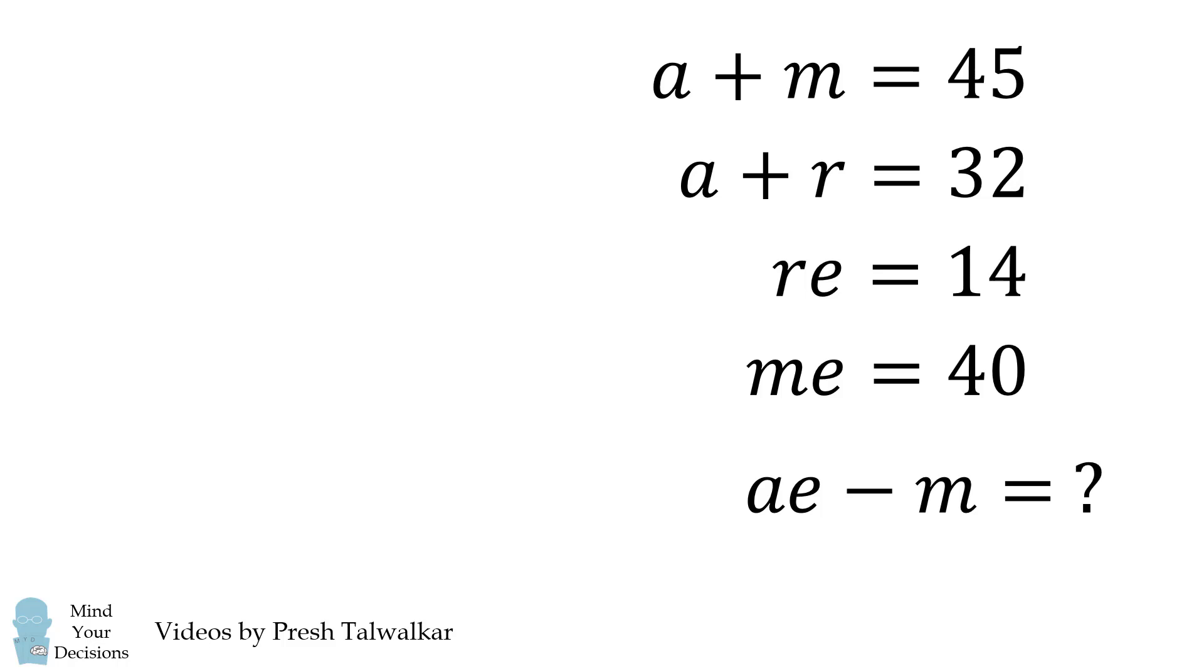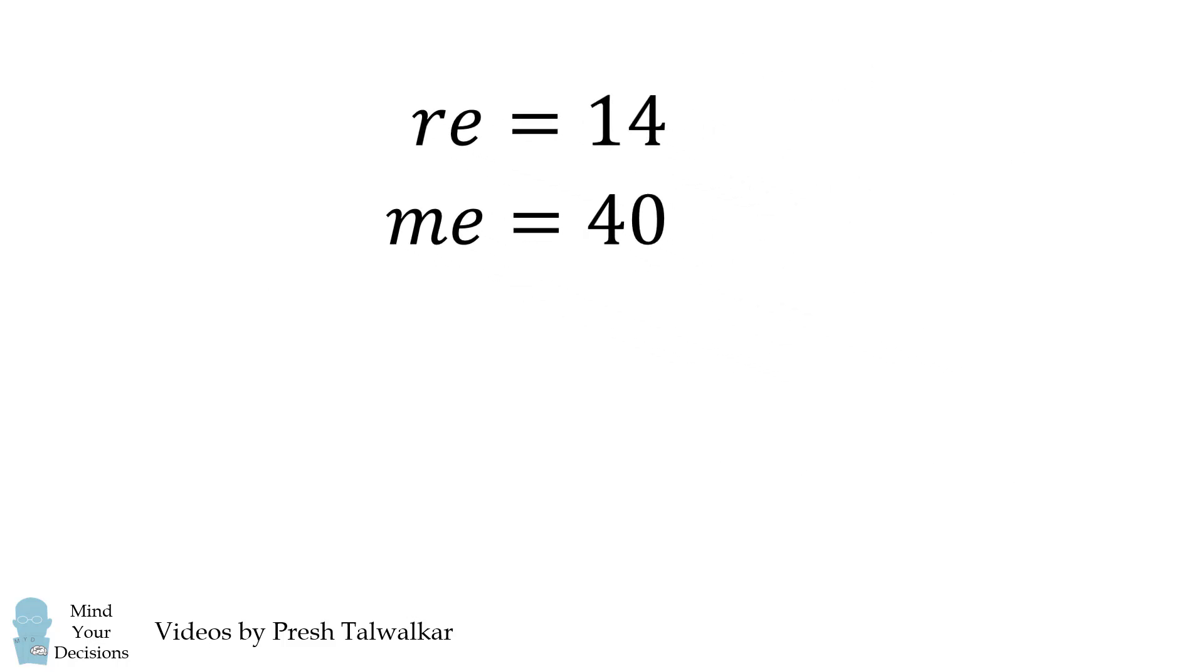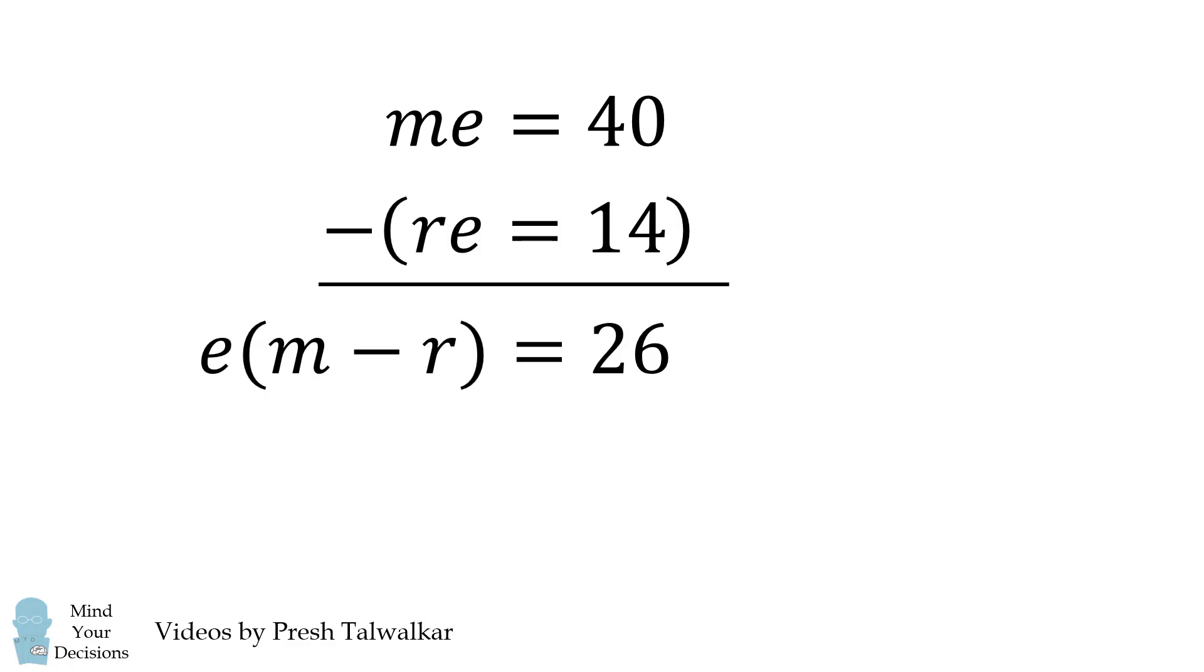Let's get started with these two equations. In fact, let's swap these two equations, and we'll subtract the second one from the first. We get e multiplied by the quantity m minus r is equal to 26.